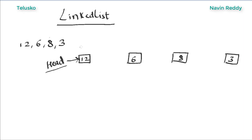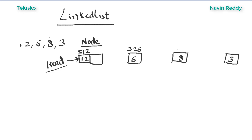We will call each element here a node. So this is a node, the 6 is also a node, the 8 is also a node, and 3 is also a node. Node value is 12, node value is 6, node value is 8, and node value is 3 — you can call them value or info. Now to link 12 and 6, you create one more memory box. This node will have two things: the info (which is 12), and the address of the next node. Every node has an address — so let's say this node is at address 512, this one at 326, this one at 101.